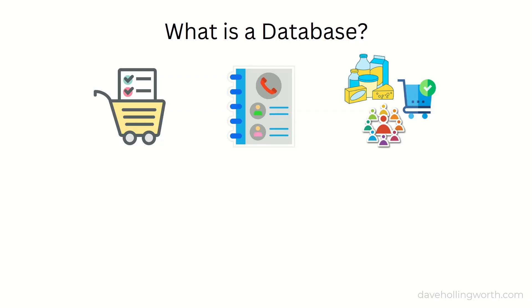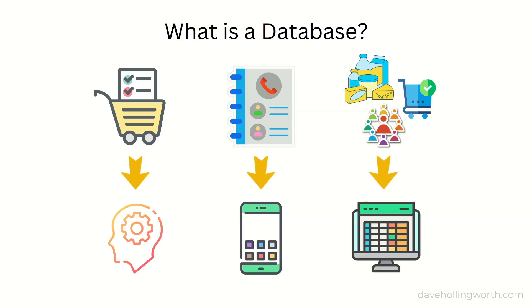Databases can be stored in different ways. For example, a shopping list could be stored in your mind or on paper. A list of all your friends' phone numbers might be stored in an app on your phone. Data relating to a shop could be stored in a spreadsheet on a computer.